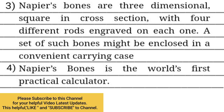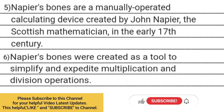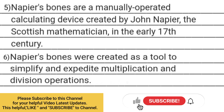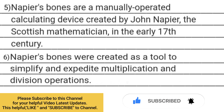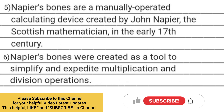4. Napier's bones is the world's first practical calculator. 5. Napier Bones are a manually operated calculating device created by John Napier, the Scottish mathematician, in the early 17th century.